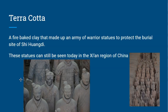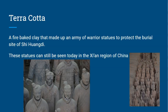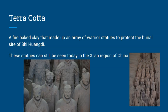Our next vocab word is terracotta. Terracotta is a fire-baked clay that made up an army of warrior statues used to protect the burial site of Qin Shi Huangdi. These statues can be seen today in the Xi'an region of China. To be clear, terracotta is the fire-baked clay itself — not the soldiers — the soldiers are simply made out of that clay.